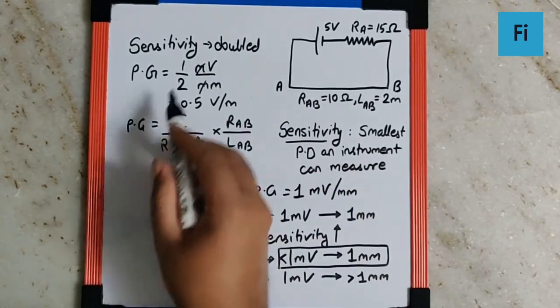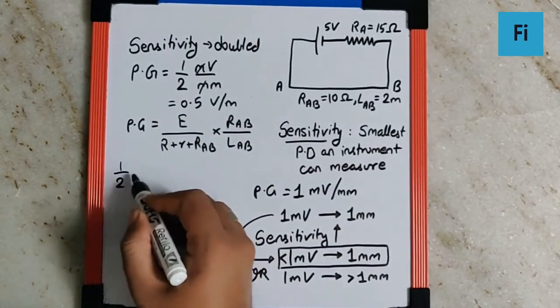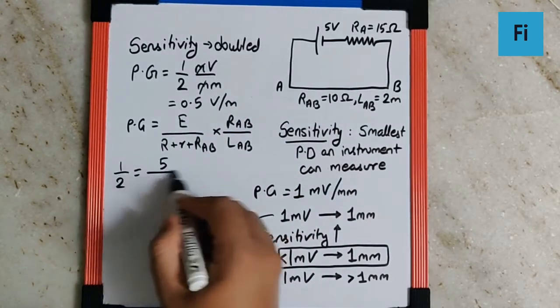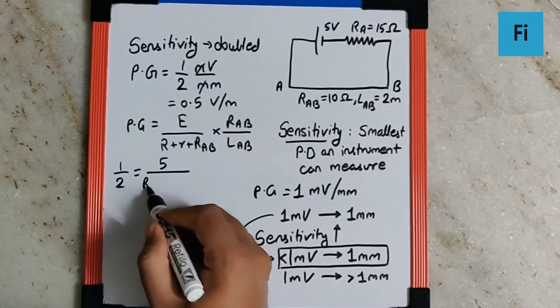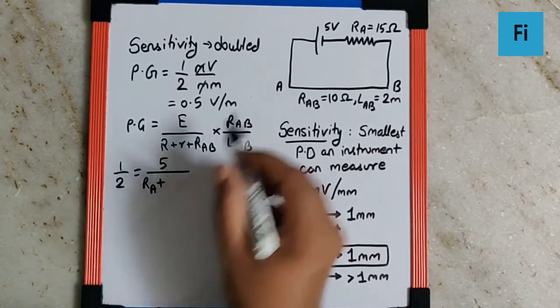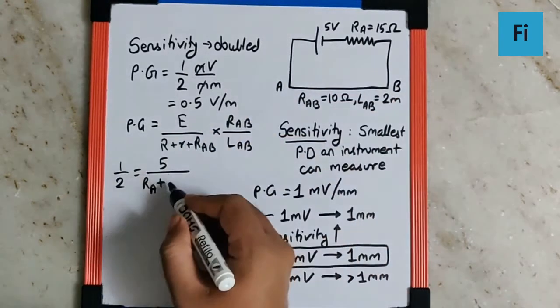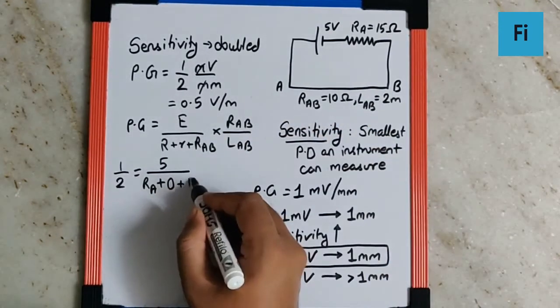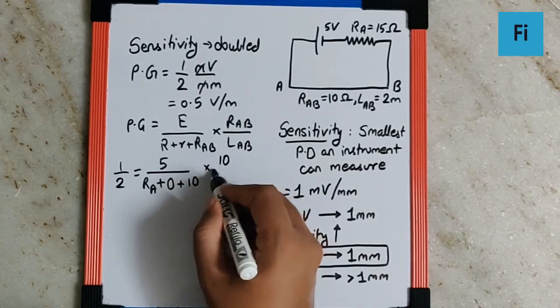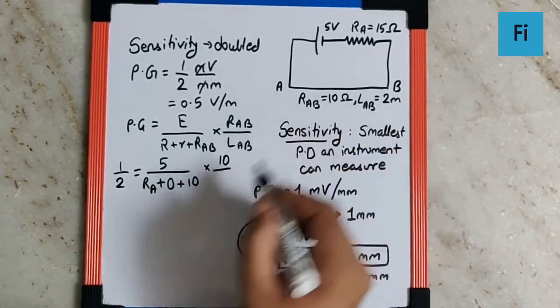The potential gradient we want is half volt per meter. EMF is 5 volt. The external resistance is RA which we now need to find out. Internal resistance nothing is mentioned so we are going to assume it to be 0. The wire resistance is 10 ohm. The length of the wire is 2 meter.